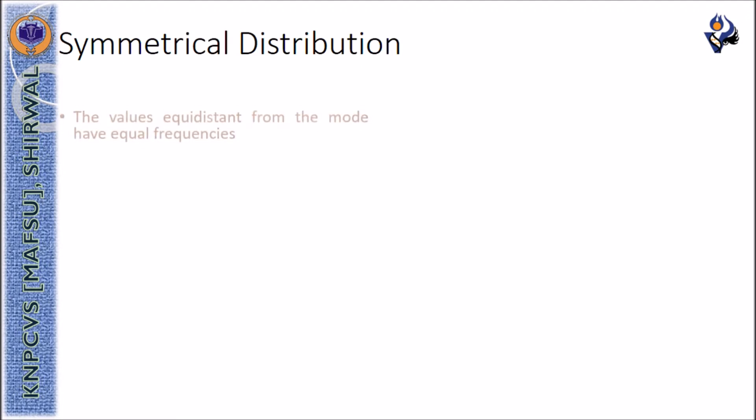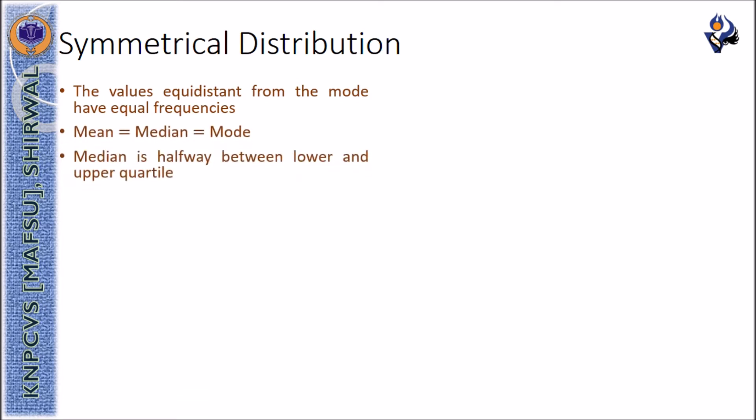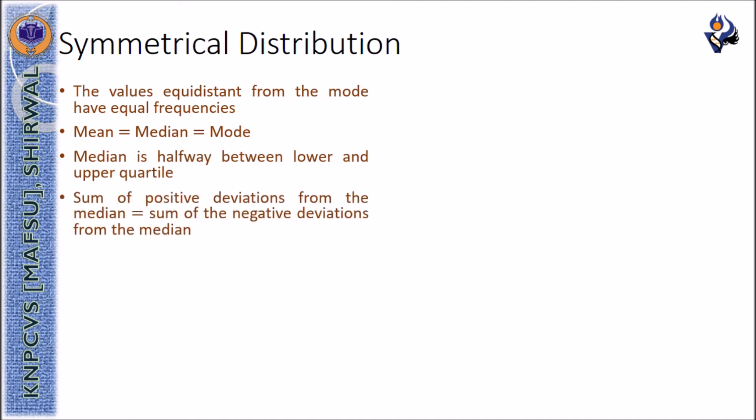We studied the properties of symmetrical distribution, where values equidistant from the mode have equal frequencies. Mean, median and mode coincide. The median is halfway between the lower and upper quartile. The sum of the positive deviations from the median will be equal to the sum of the negative deviations from the median.